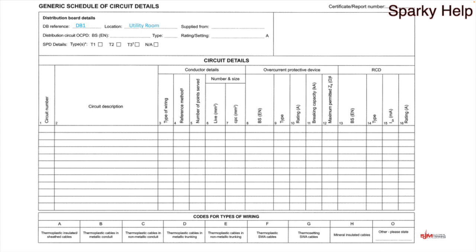Location — hopefully that speaks for itself. It's physically where it is so someone could find it again, not up on the ceiling or anything silly like that. Where is it supplied from? In this case, for a domestic or commercial installation, the very first distribution board will be supplied from the origin. However, if you took a distribution board out to the garage, then the garage will be supplied from the distribution board within the house. So it's just where is it fed from?